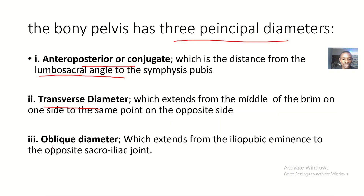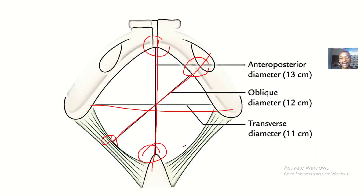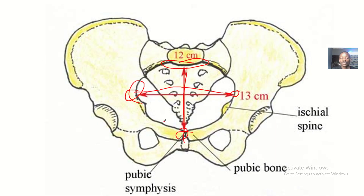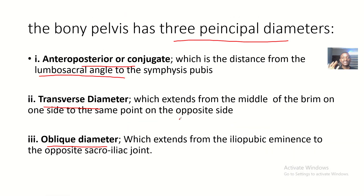The oblique diameter is a diameter which extends from the iliopubic eminence to the opposite sacroiliac joint. Let me illustrate here. So if this is the iliopubic eminence, the sacroiliac joint is on the opposite side — you join it like this. If you are measuring from the opposite side, this is the iliopubic eminence, and this is the sacroiliac joint on the opposite side — you join it like this. These are the three principal diameters of the bony pelvis.